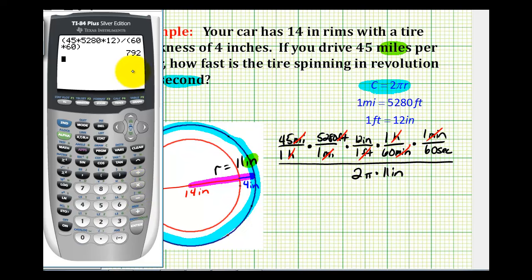So this tells us when you're traveling 45 miles per hour, you're also traveling 792 inches per second. And now we'll divide this by 2 times pi times 11. And this will give us the number of revolutions per second. So it's roughly 11.46 revolutions per second when traveling 45 miles per hour.